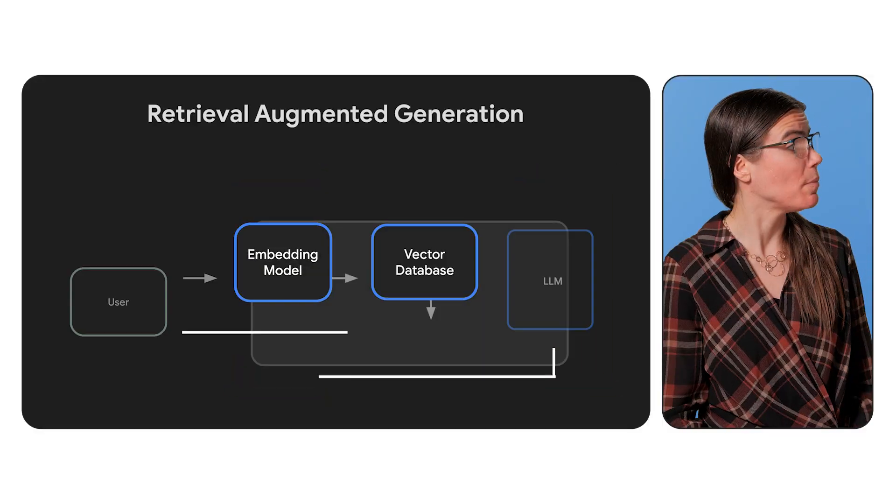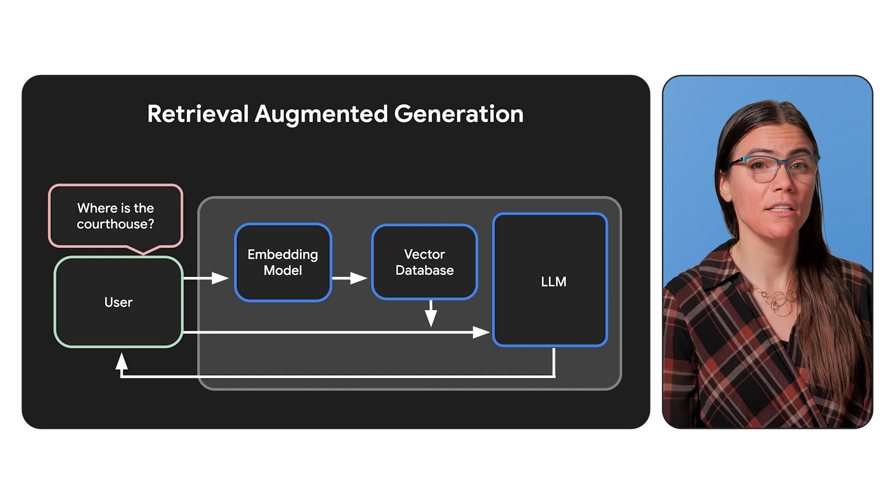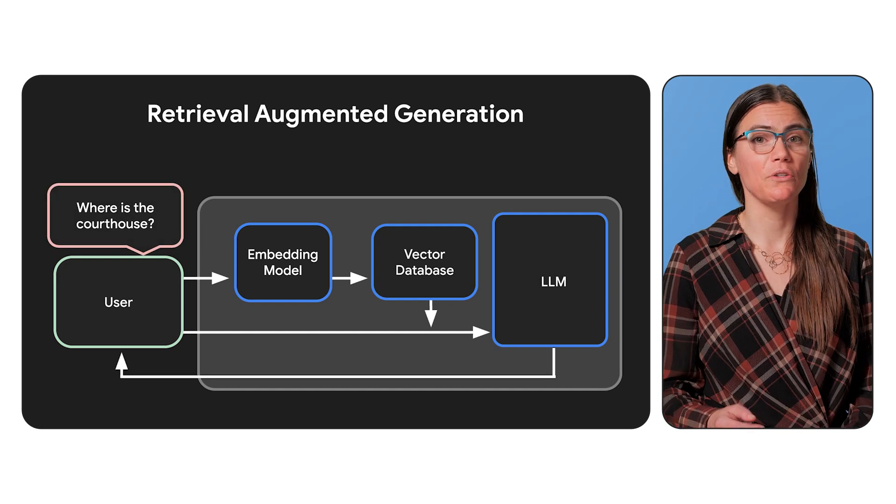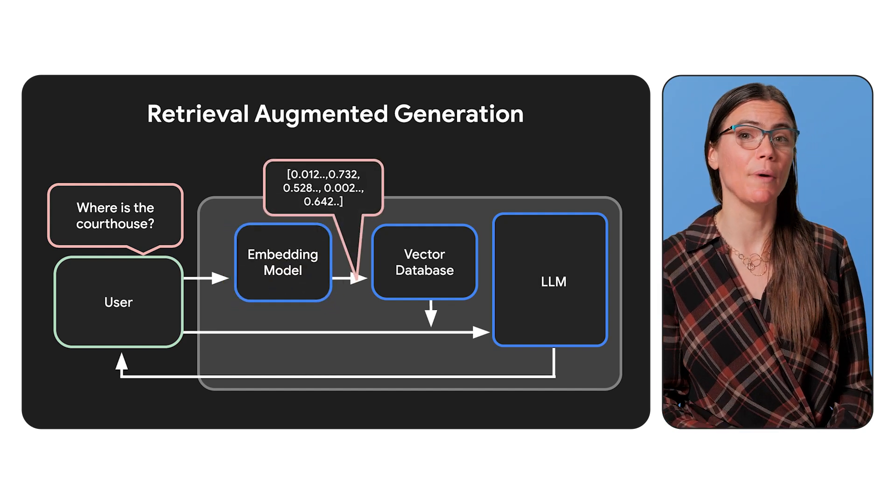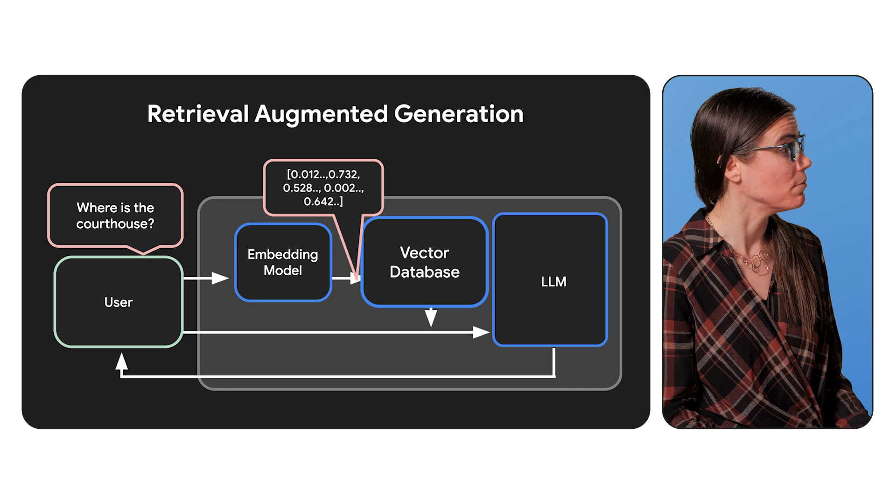Okay. So with that preprocessing step out of the way, let's walk through what happens when a user asks our chatbot a question. First, we're going to take the user's question, and we're going to call that a prompt, and we're going to use the same embedding model we used in our preprocessing step to generate an embedding or a vector of that user's question.